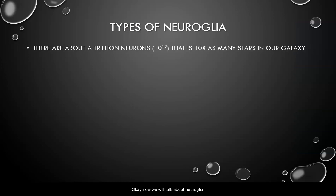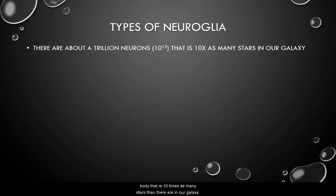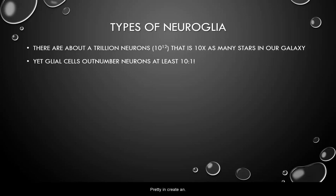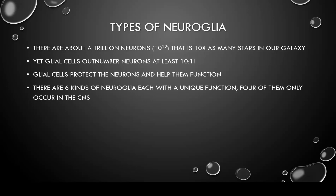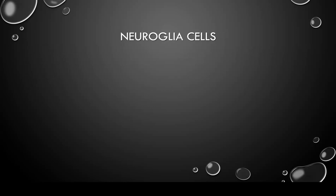Now let's talk about neuroglia. We've been talking about neurons, and there are about a trillion — ten to the twelfth — neurons in your body. That's ten times as many as there are stars in our galaxy. But glial cells actually outnumber neurons at least ten to one. The glial cells function to protect the neurons and help them function. There are six kinds of neuroglia, each with a unique function, and four of them only occur in the central nervous system.